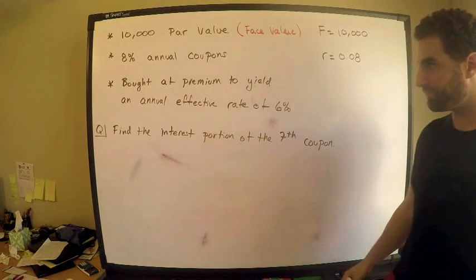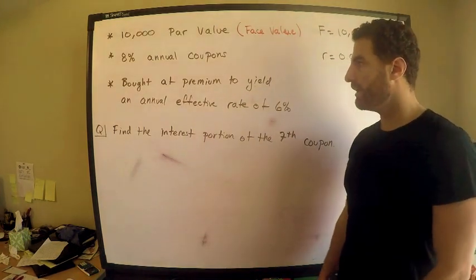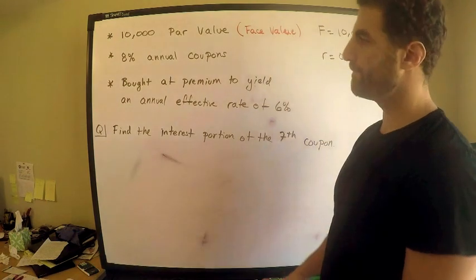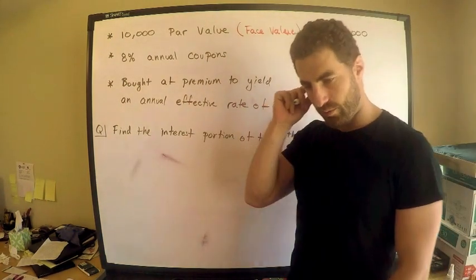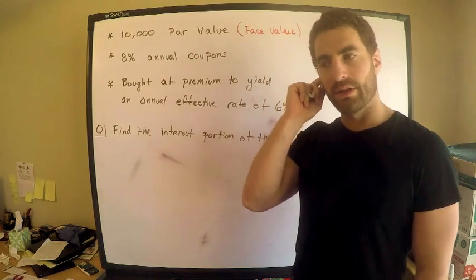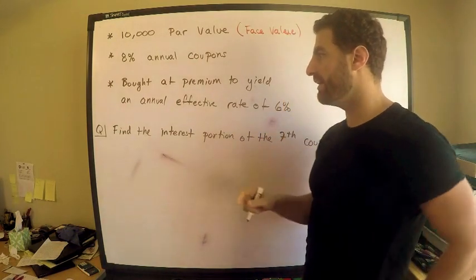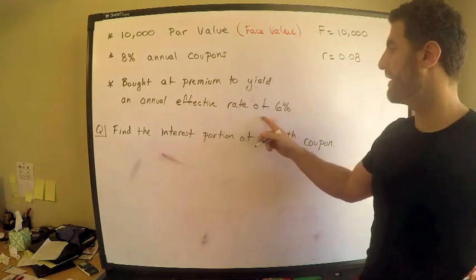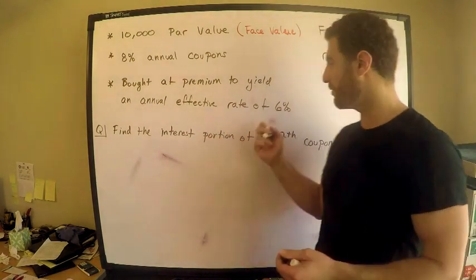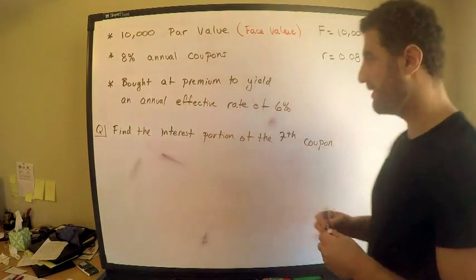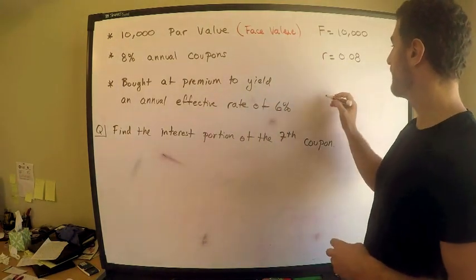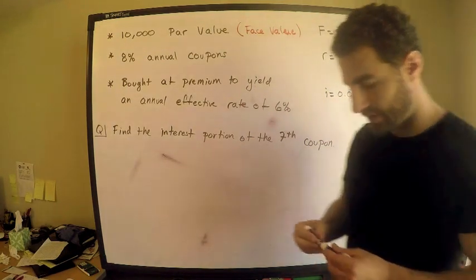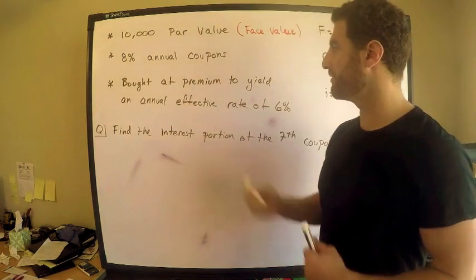In this case, we're told we buy this bond at a premium, and it's going to yield an effective rate of 6%. This corresponds to my interest rate i, so i equals 0.06. Now I need to explain the premium situation.